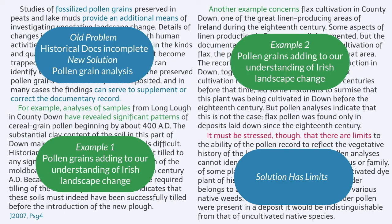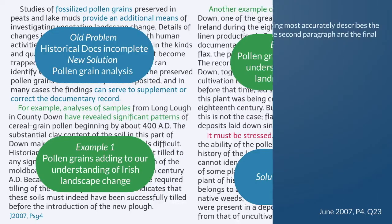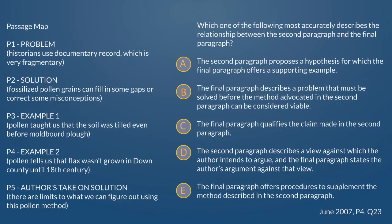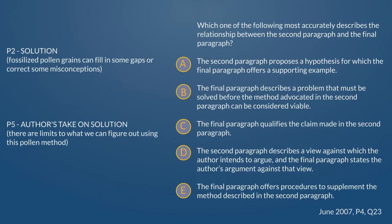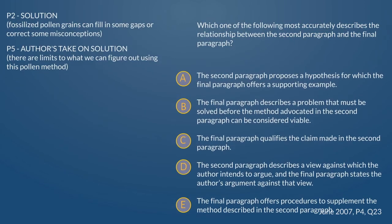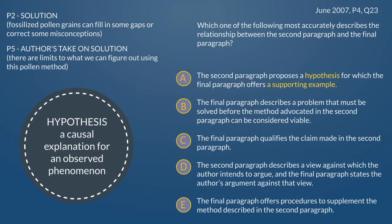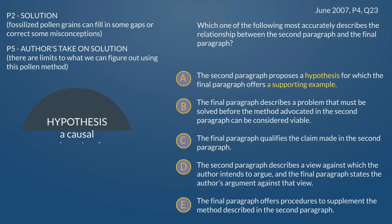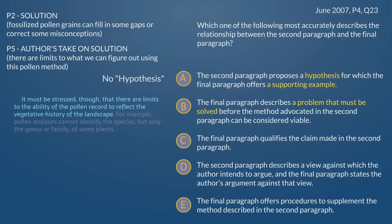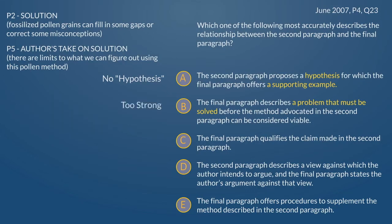Pause the recording until you've got an answer that you like. Welcome back. After we first read a question stem, we try to predict an answer in our head. I probably would have said the fifth paragraph is showing us the limitations of the method that's described in the second paragraph. A says that the second paragraph is proposing a hypothesis — it's really important to understand that 'hypothesis' means like a causal explanation for some phenomenon that happened. That's not even close to what the second paragraph is doing, which is describing a method of research. B is saying that the final paragraph describes a problem that must be solved before we can even use this pollen grain method. 'Must be solved' seems pretty harsh — we said there are limits to the pollen grain method, but the author didn't say we have to solve this before it can be considered viable.